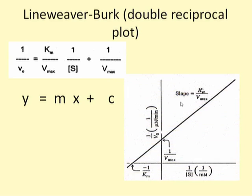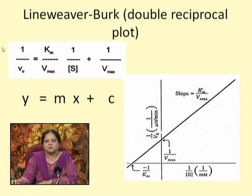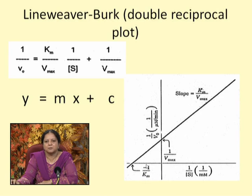Plotting 1/V on the y-axis and 1/S on the x-axis gives a straight line whose slope is Km/Vmax and whose y-intercept is 1/Vmax. This is the double reciprocal plot because both velocity and substrate concentration are plotted as reciprocals. If the line is extrapolated into the negative x-axis region, it intersects at minus 1/Km, which can be obtained by setting Y equal to 0.